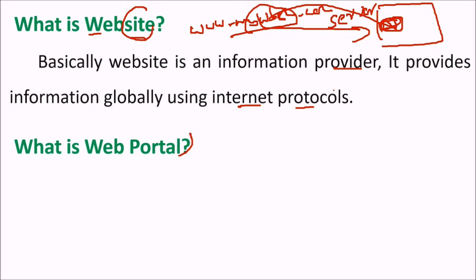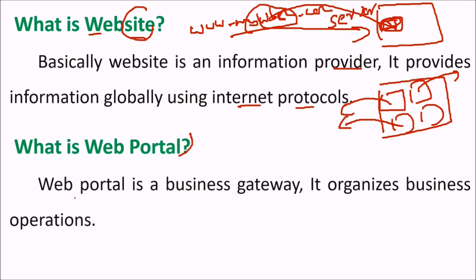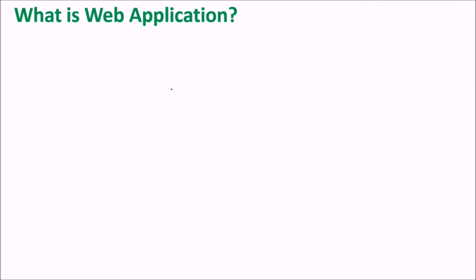A web portal is an HTML page or location that acts as a combination of various services. You want news, you have it; you want email, you can go there; you want video content, you can access it. So a web portal is a gateway — it is a business gateway that organizes business operations. Examples include online shopping portals and job portals.